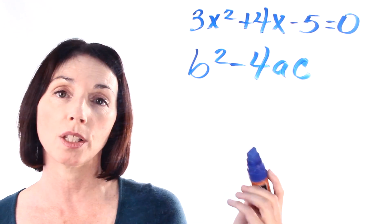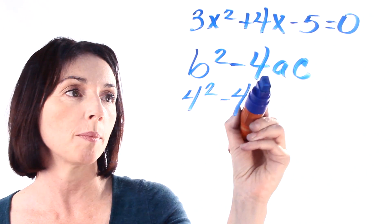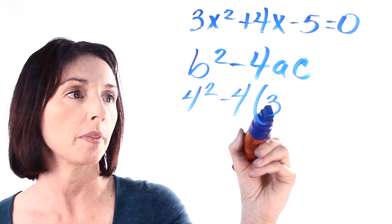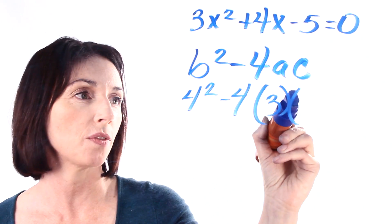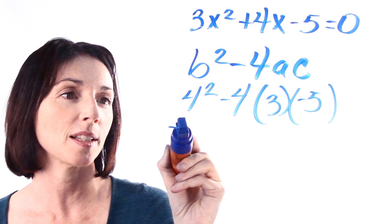In our case b is 4, so we have 4 squared minus 4 times a, which is 3, times c, which is minus 5. Very important that you get the signs right. So let's see what happens when we calculate this.